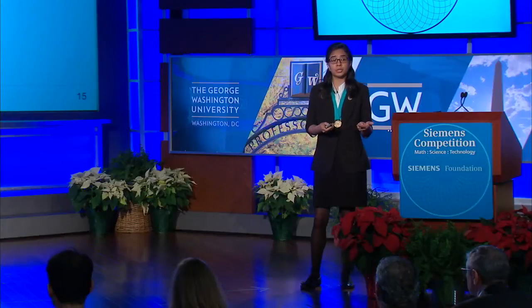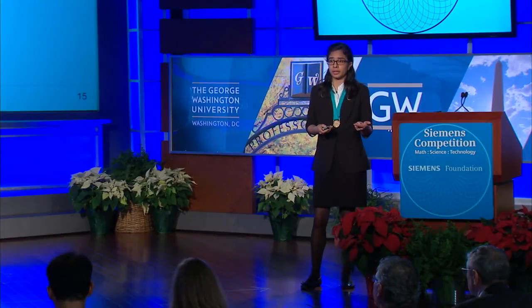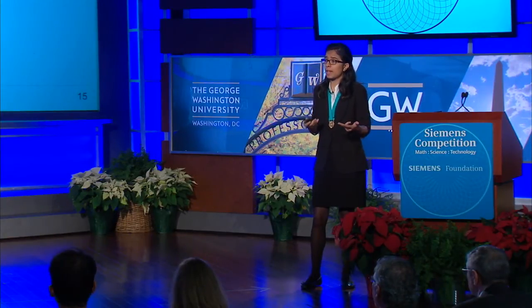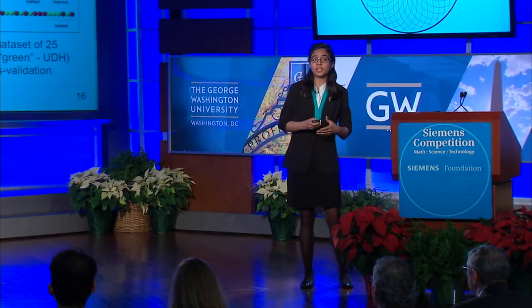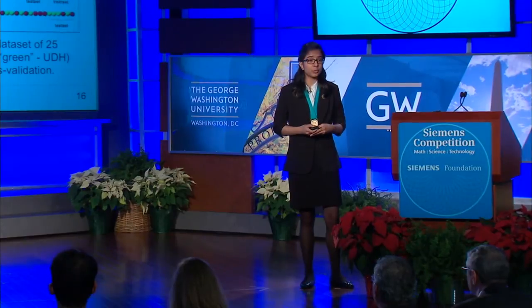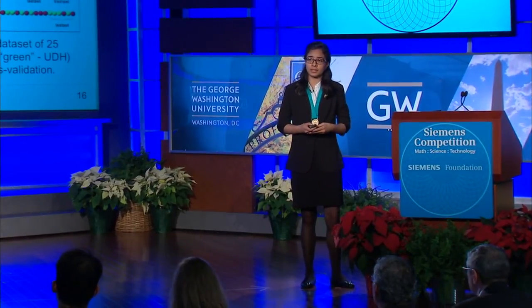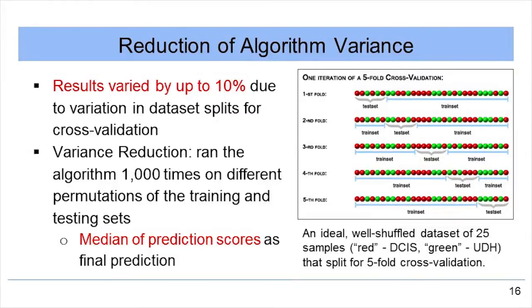Our first innovative optimization technique was the reduction of algorithm variants to make more robust predictions. After extensive experimentation, we found that our results varied by up to 10% due to variation in dataset splits for cross-validation.